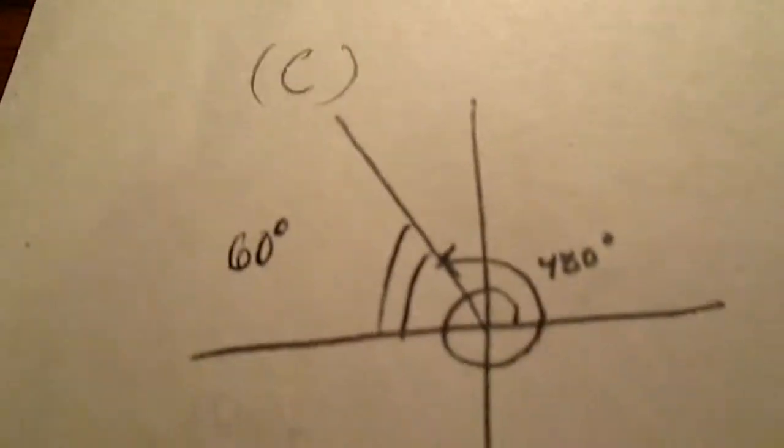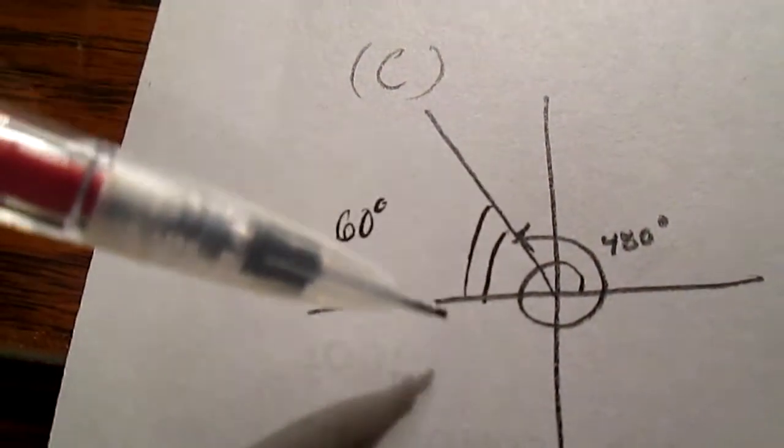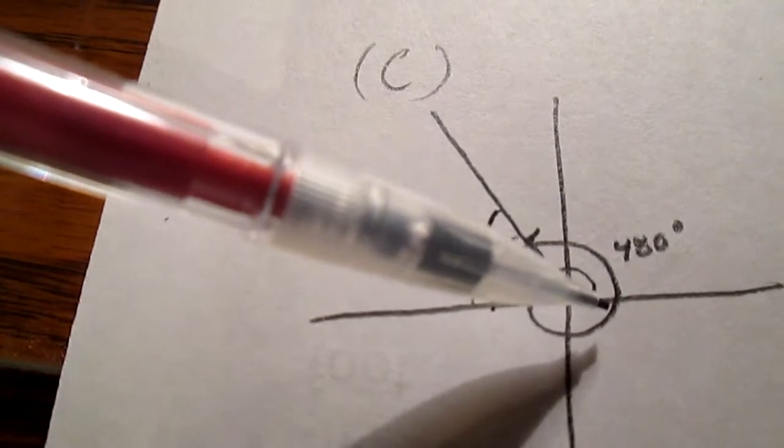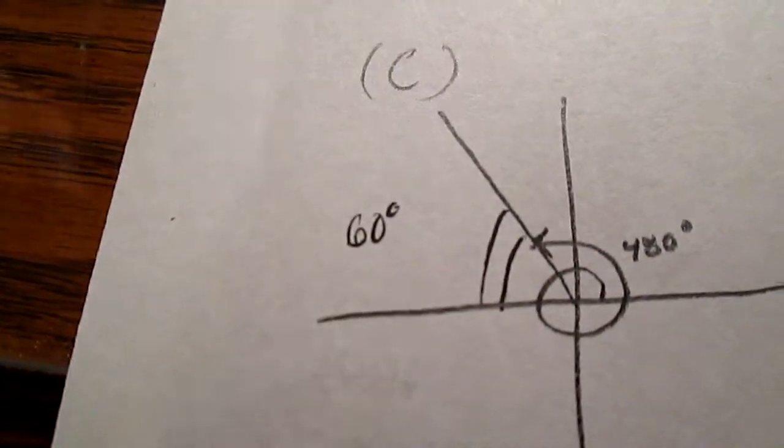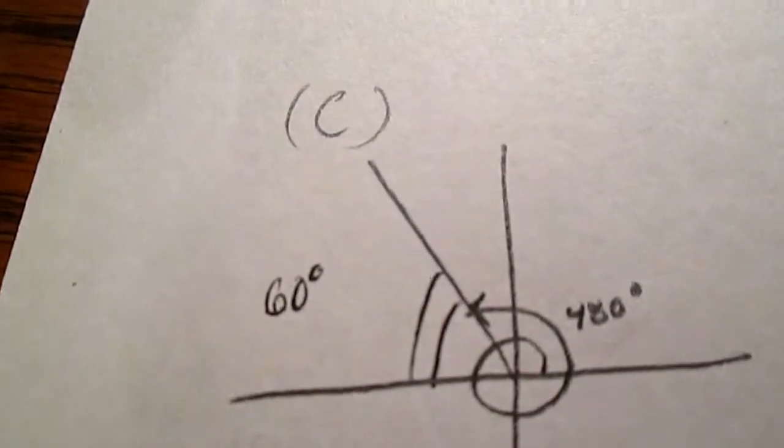Then for c, note that you have one full circle, which is 360, and you're actually just going 120 degrees, which this one's actually pretty easy.